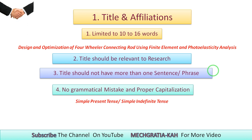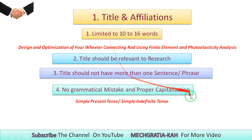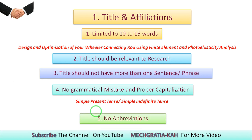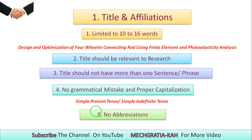The title should be a single sentence with no grammatical mistakes and proper capitalization. Every word in the title should start with a capital letter — though it depends on which journal you publish in. The next point is no abbreviations. For example, FEA, Finite Element Analysis, PE Analysis — you should not use any abbreviations in the title.